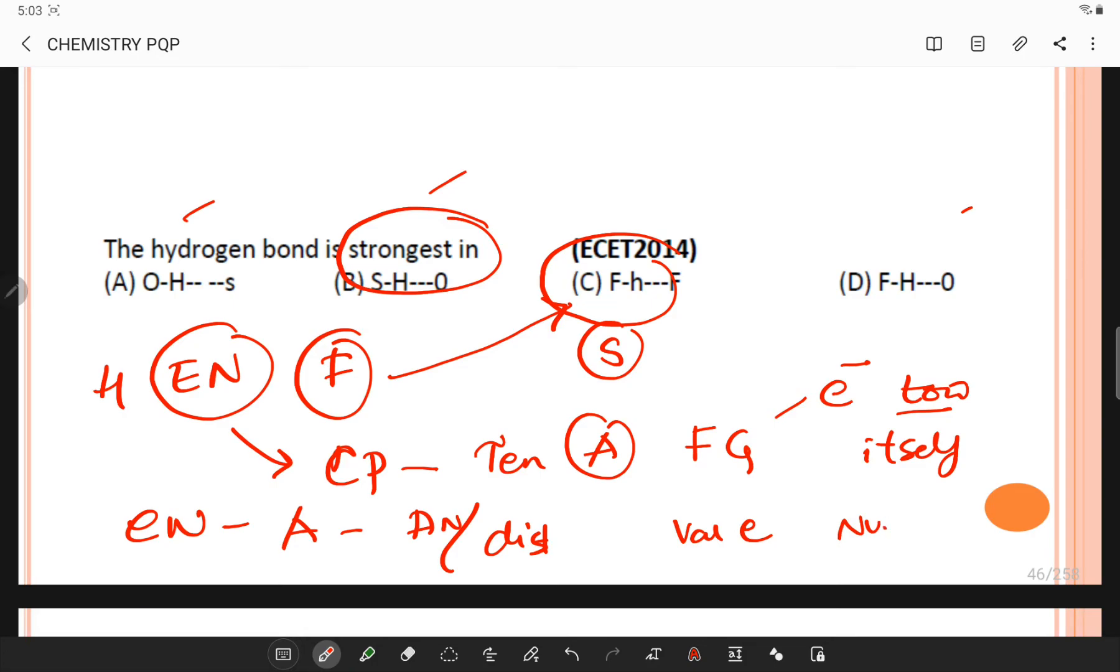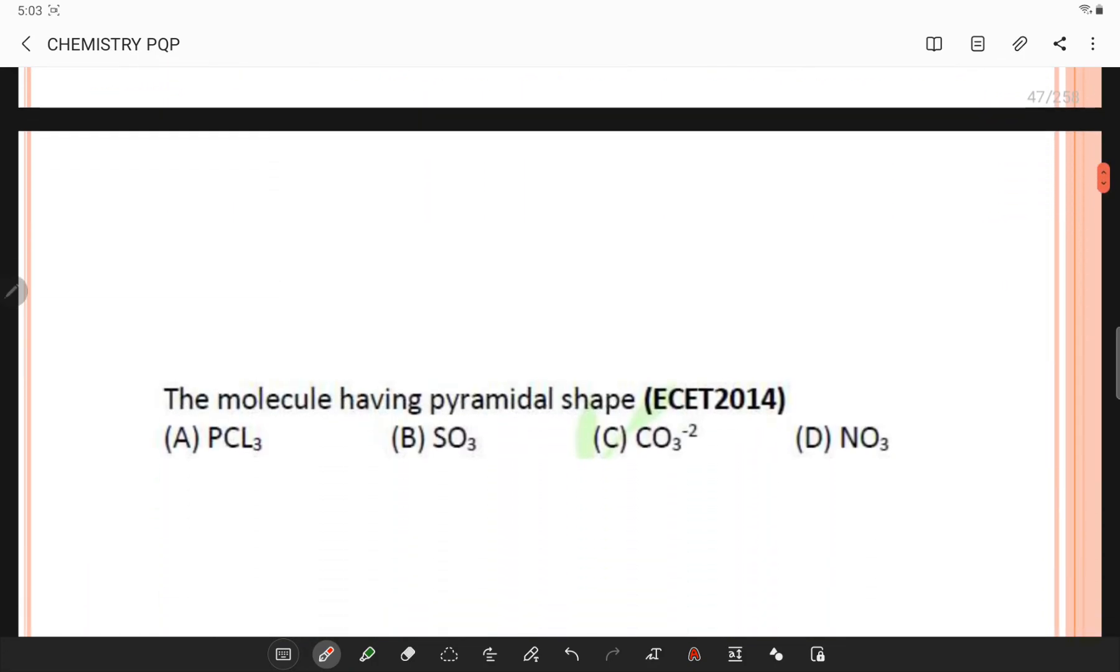The molecule having pyramidal shape... If you observe, PCl3 has a molecular geometry which is trigonal pyramidal in nature and the bond angle is 103 degrees. Phosphorus trichloride has a hybridization of sp3 and it has a trigonal pyramidal nature.